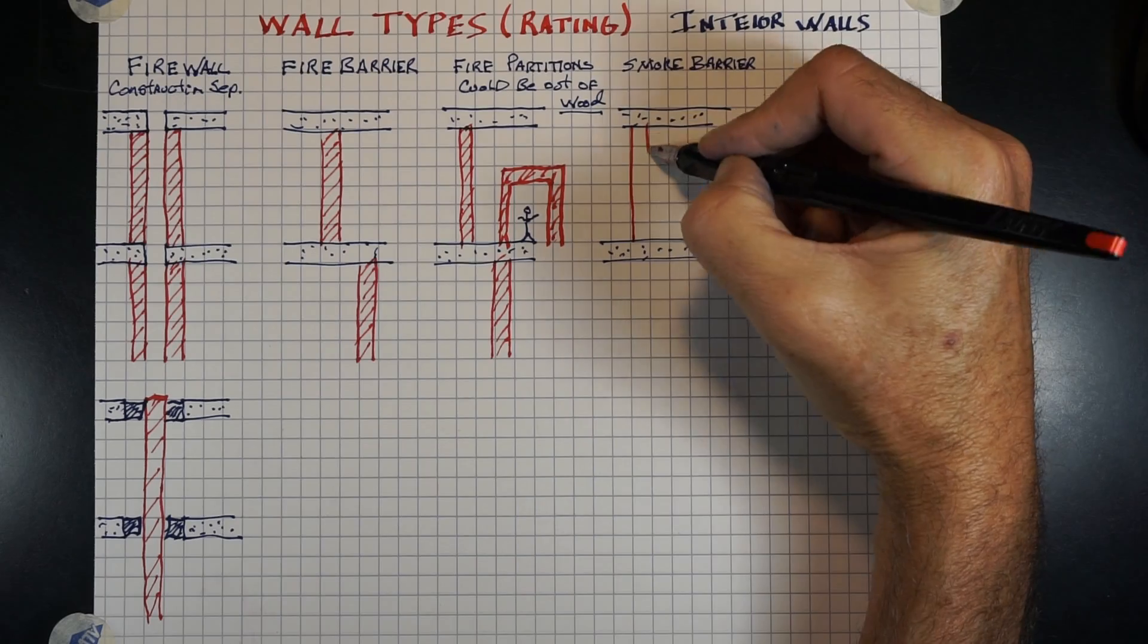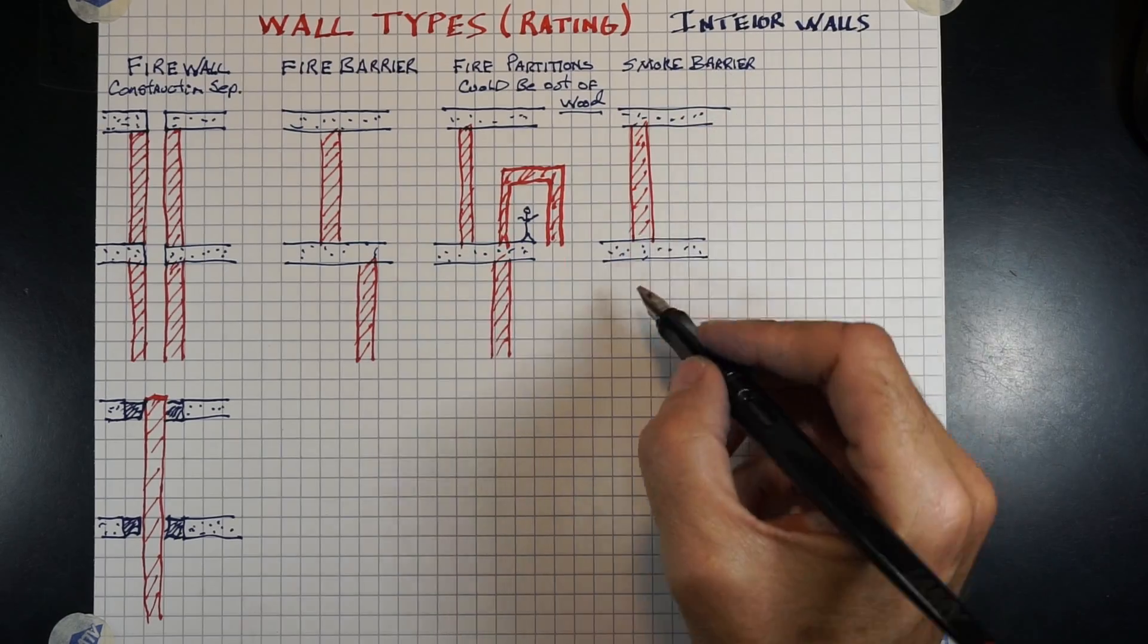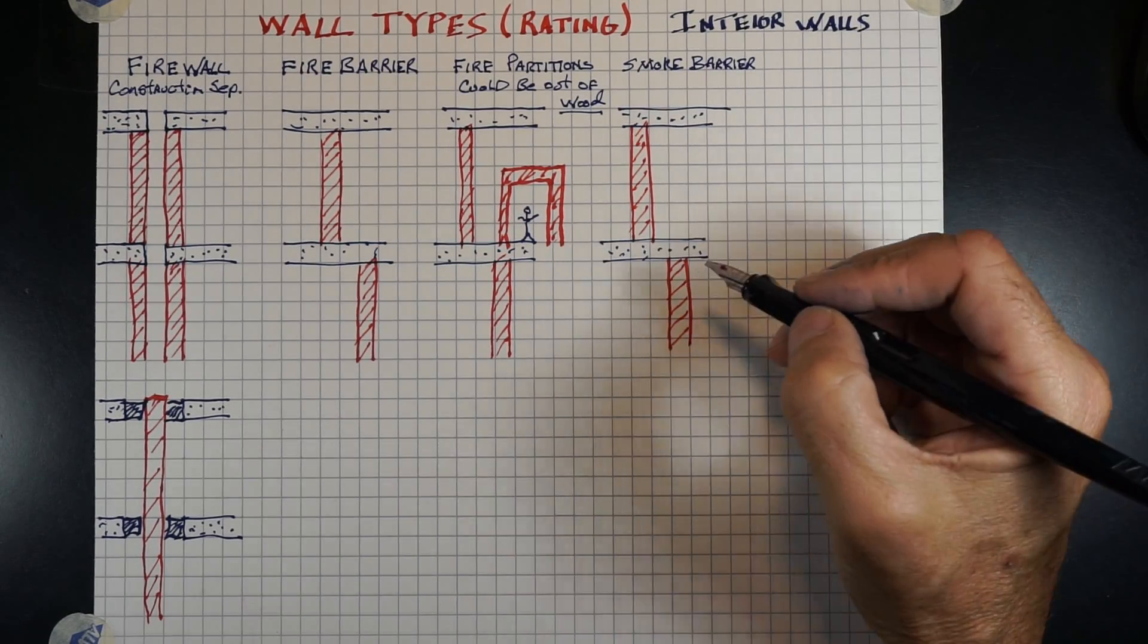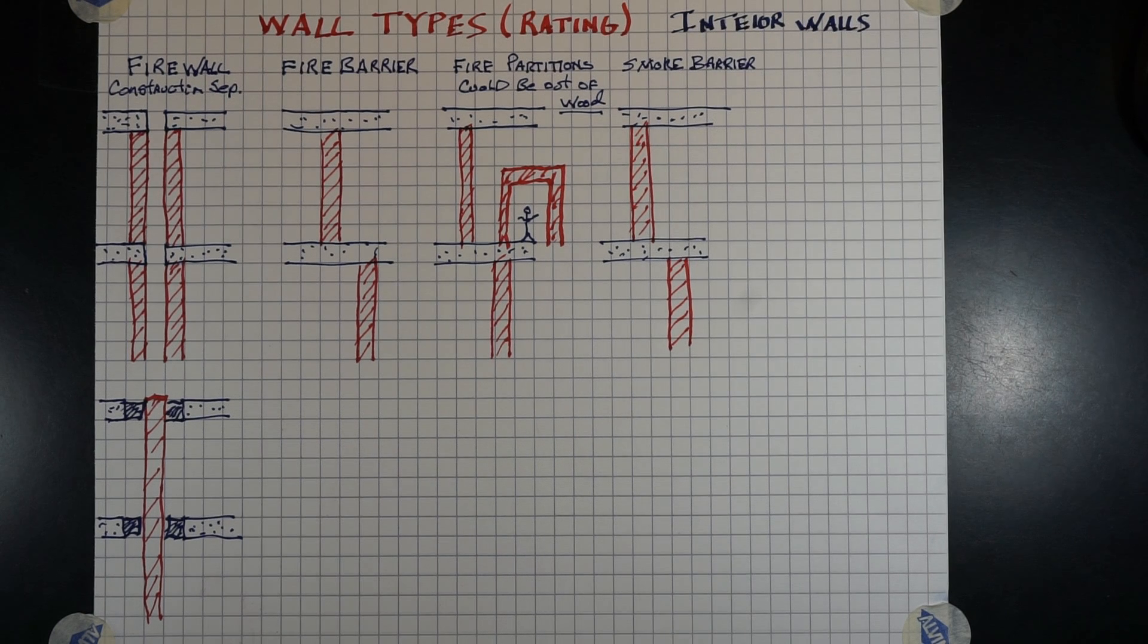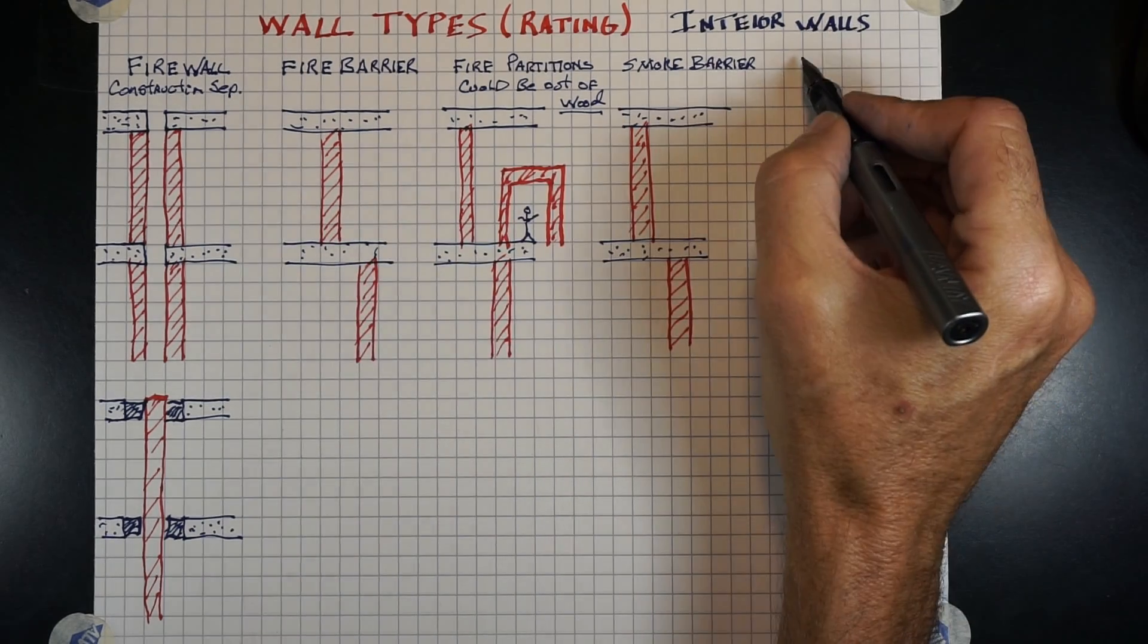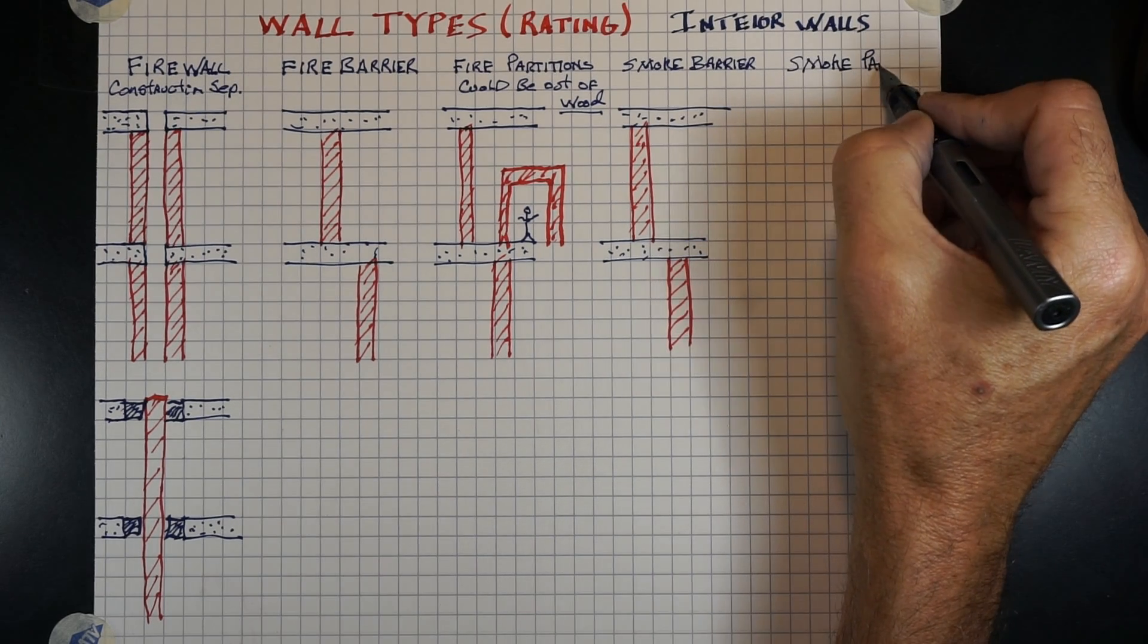A smoke barrier could either be made out of a fire barrier or a fire partition. Again, fire barrier is non-combustible material. A fire partition could use internal structural combustible material. A smoke barrier, the only difference between that and either one or the other is that a smoke barrier has fire smoke dampers in it to limit the transmission of smoke.